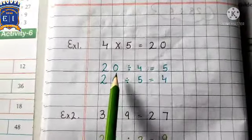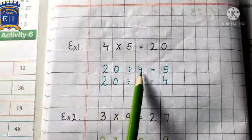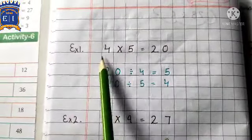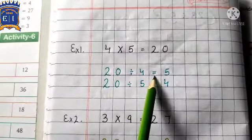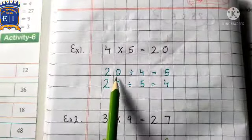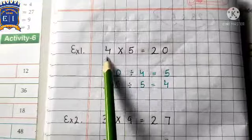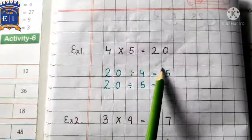Students, so agar hum 20 divided by 4, thik hai, agar hum 20 ko divide kar dein 4 se, to students answer kya aayega 5. 4 ke table mein kahan 20 aata hai? Agar aap karke dekho, 4, 5 sa 20, to answer kya aayega 5.